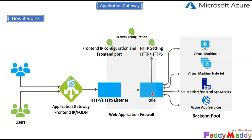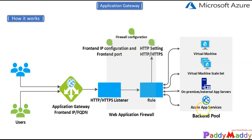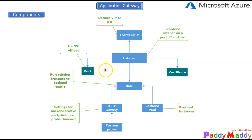Logically, the flow goes from the user to Application Gateway, then to the listener configuration, then to WAF rule evaluation. If rules match, traffic is sent to the required backend pool. If no rules match, prevention mode stops the request from going further. Those are the backend actions involved in the flow.